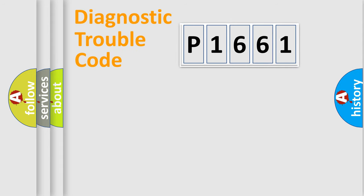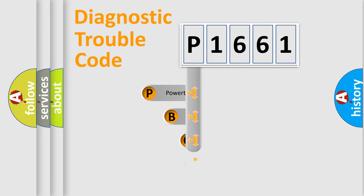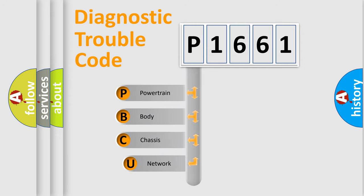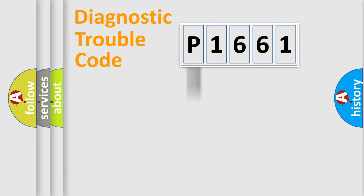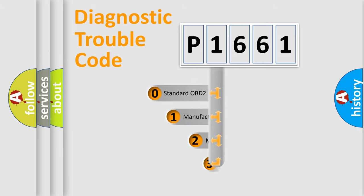Let's look at the history of diagnostic fault code composition according to the OBD2 protocol, which is unified for all automakers since 2000. We divide the electric system of an automobile into four basic units: Powertrain, Body, Chassis, and Network. This distribution is defined in the first character of the code.